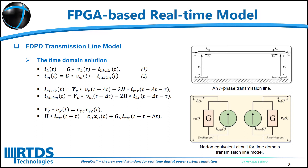The time-domain solution for the frequency-dependent phase-domain transmission line model can be expressed as equations 1 and 2, and its Norton equivalent circuit is represented in this figure. The matrix G is the equivalent impedance matrix, and I-histor-k and I-histor-m are history-current vectors. The symbol star indicates the matrix-vector convolution. The question then becomes how to update the history-current terms in each simulation timestep, which also has convolution computing involved.